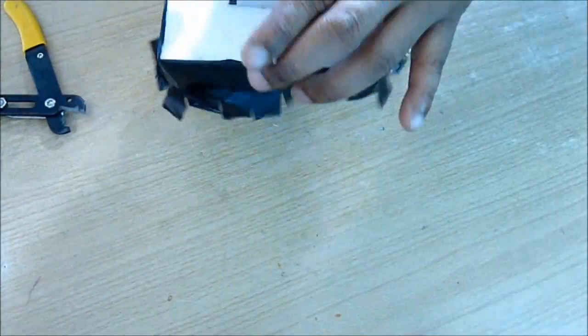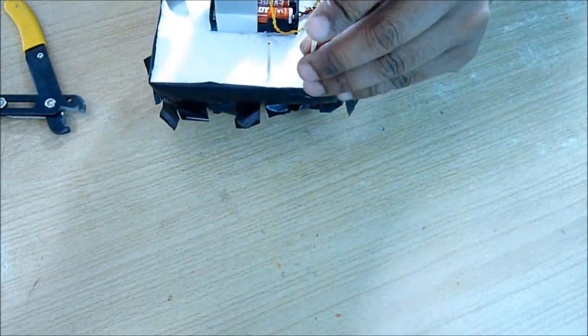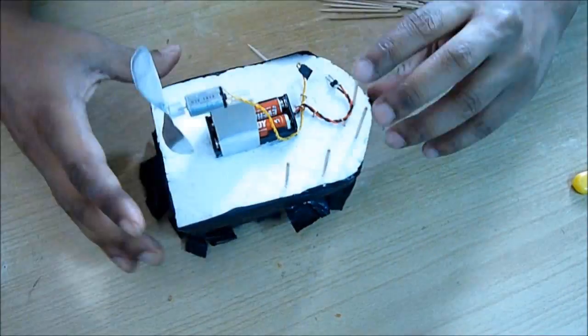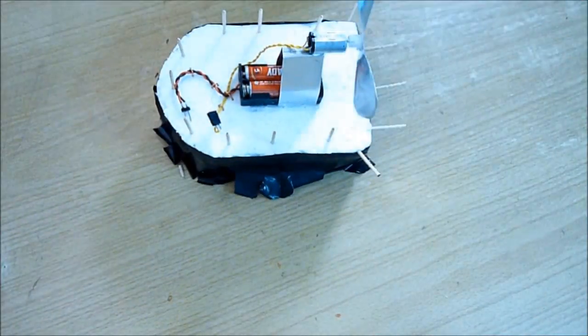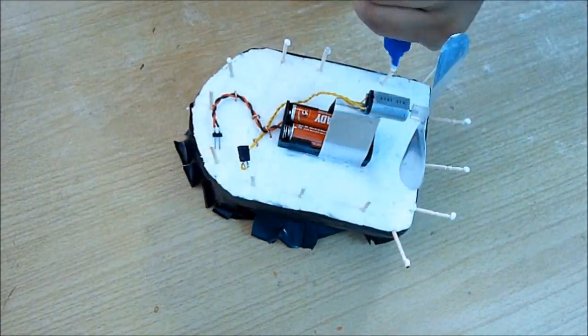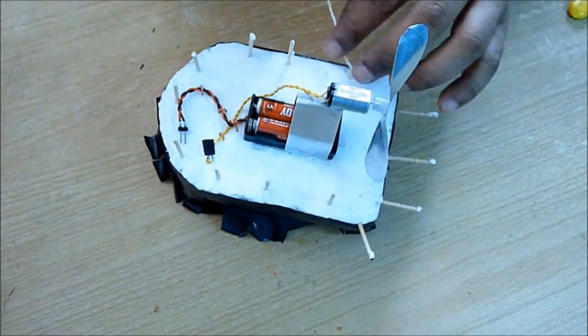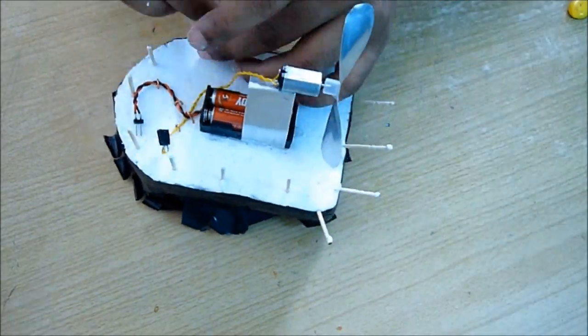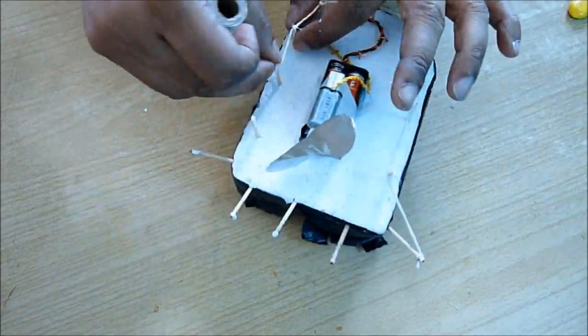Use some toothpicks to make a railing like this. Put some glue and use a thick string to complete this railing. Really get a nice look of railing.